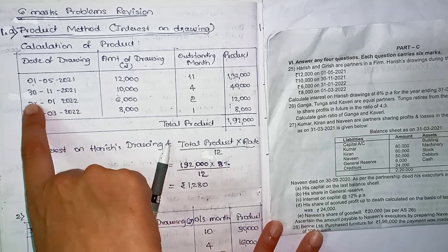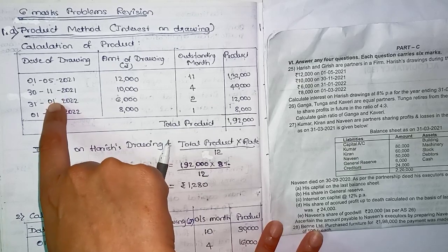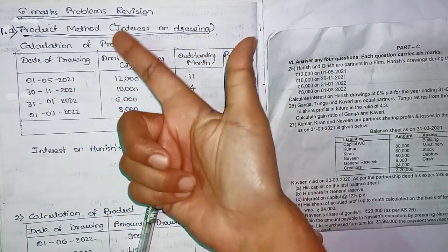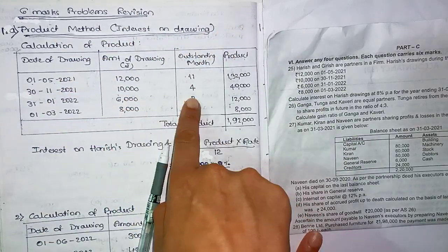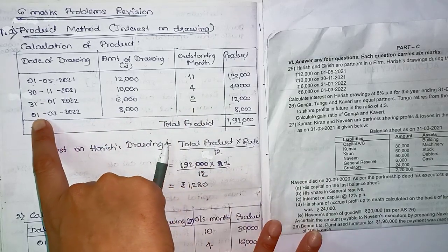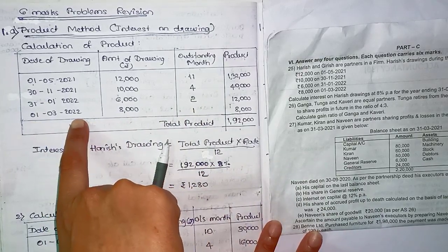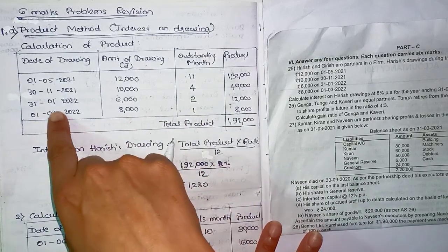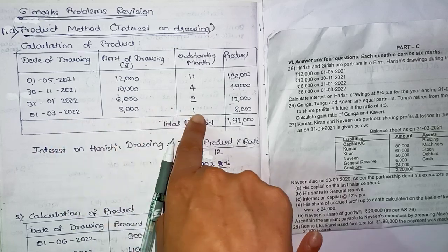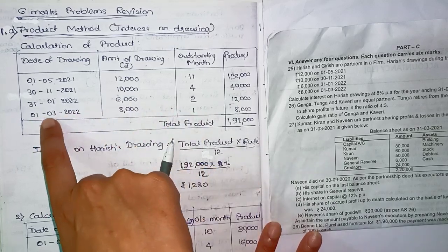And here it is the 31st — month end. So the first month is not counted; second and third month are counted. So 2 months outstanding. And then here is the last date: 31st March 2022. The third month is not the first month.